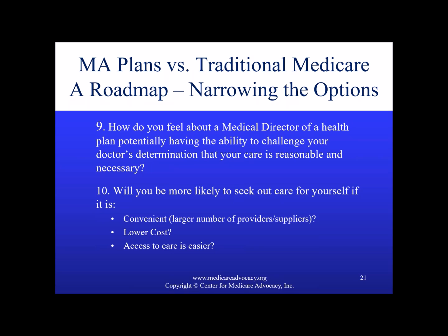Someone in traditional Medicare can go to any provider they want as long as that provider is willing to see them. We also hear from folks with traditional Medicare who have considerable problems finding providers willing to treat them — for example, a home health agency where an individual has an order for home health care but cannot find an agency willing to treat them. If someone is in a Medicare Advantage plan and requires medically necessary services, there is more leverage to hold over that plan to provide those services. The Medicare Advantage plan, having the enrollees, has an obligation — if it agrees services are medically necessary — to connect individuals with providers who can deliver them.